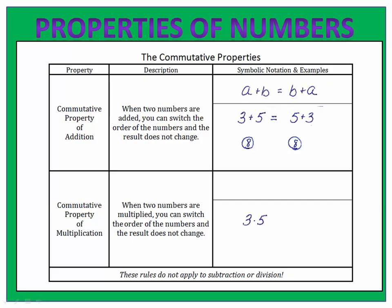The same is true for multiplication. We have three times five, which gives us fifteen, and five times three, which also gives us fifteen. It didn't matter which order we multiplied those two numbers — we came up with the same answer. In symbolic notation, we say a times b equals b times a. The commutative property only works for multiplication and for addition; it does not apply to subtraction or division.